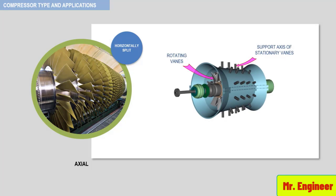In the 3D model view shown here, the rotating vanes which are mounted on the rotor drum are seen from one end. The stationary vanes are mounted by means of a supporting arrangement from the casing. Various arrangements exist for supporting the stationary vanes. A view showing only the rows of rotating vanes in the upper half is seen here.